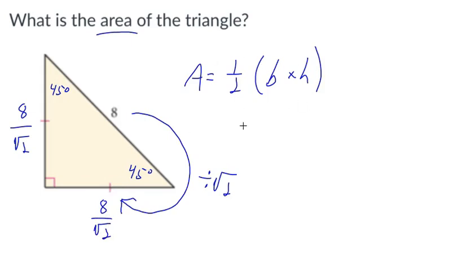Let's go to our triangle formula now. So the area of this triangle will be one-half times the length of the base, which is 8 divided by the square root of 2, times the height, which is 8 divided by the square root of 2.